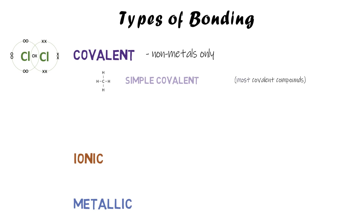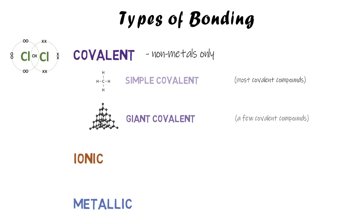Almost all covalent compounds are simple covalent. There are a few exceptions which are giant covalent compounds — instead of small molecules, these have thousands of atoms joined together. They're still covalently bonded, but there are just a few examples you need to know that form giant structures.